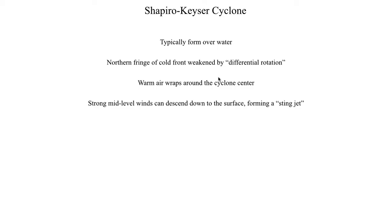In the case of a Shapiro-Kaiser cyclone that descent is much, much more forceful and much sharper. As opposed to the mid-level winds gradually descending down to the surface, in a Shapiro-Kaiser cyclone those mid-level winds descend to the surface very rapidly, and that tends to result in a current of very strong air which is often referred to as a sting jet.